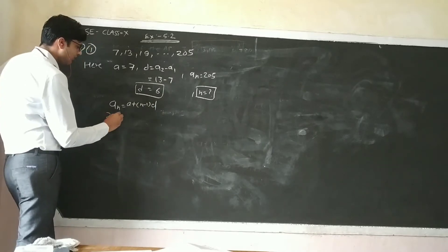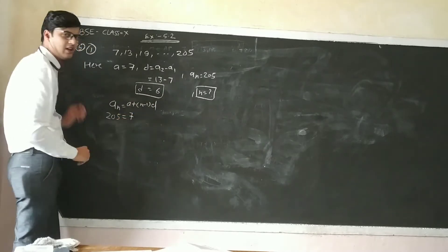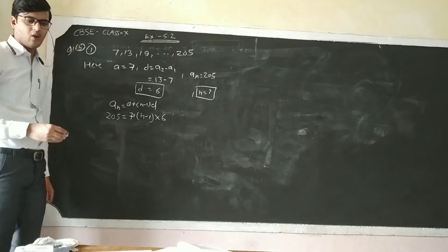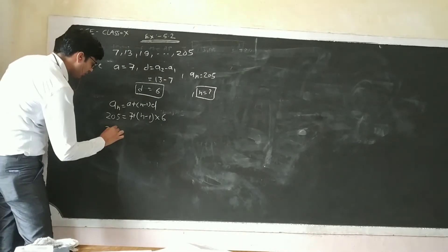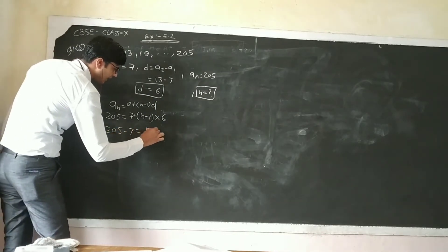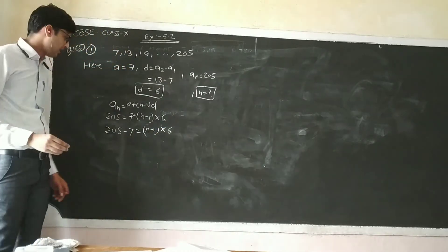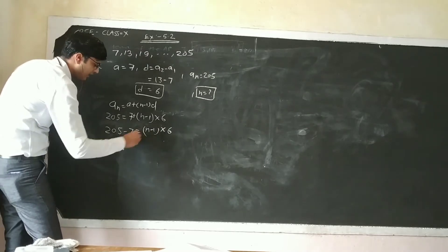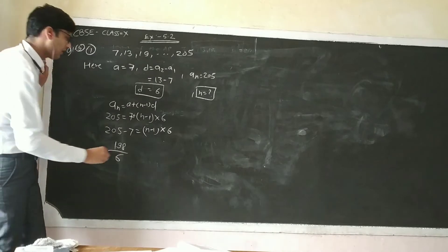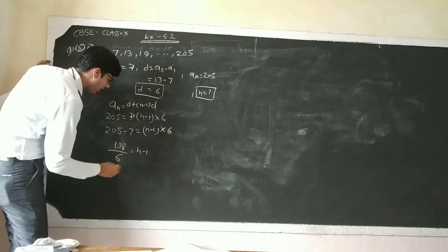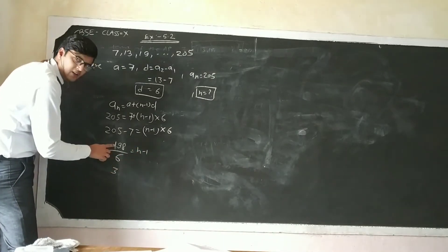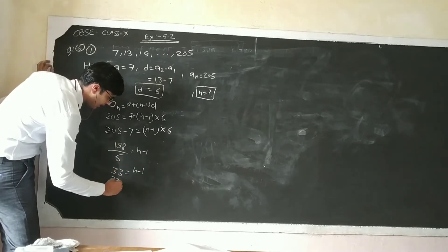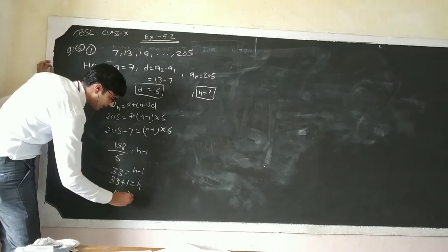So: 205 equals 7 plus (N minus 1) times 6. Then 205 minus 7 equals (N minus 1) times 6, giving 198 equals (N minus 1) times 6. Dividing by 6, we get N minus 1 equals 33, so N equals 33 plus 1, which gives N equals 34.